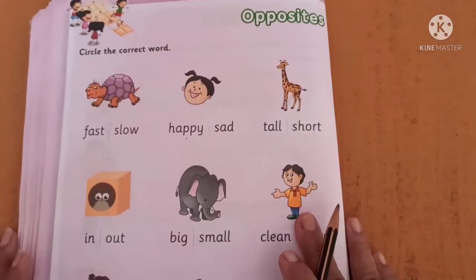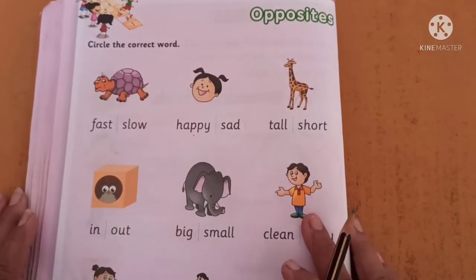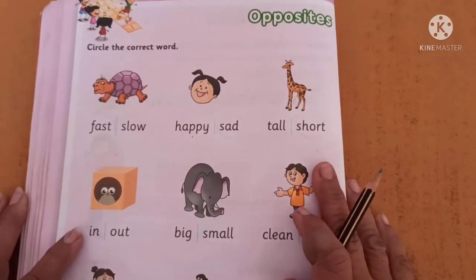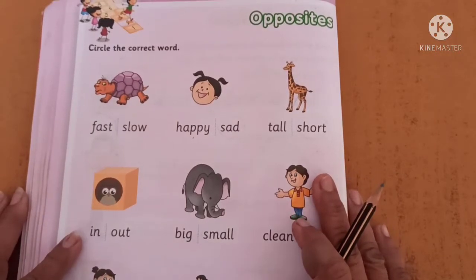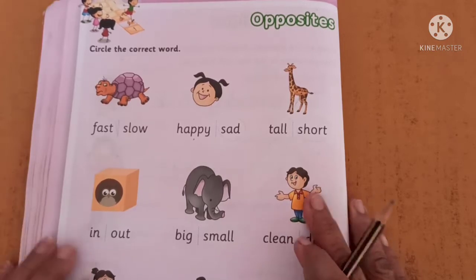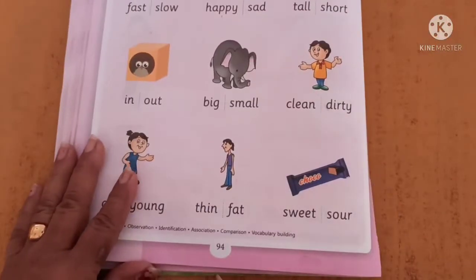Hello kids, good morning. Today we will learn in English a new topic — opposites. So for that, open your literacy skill book, page number 94.